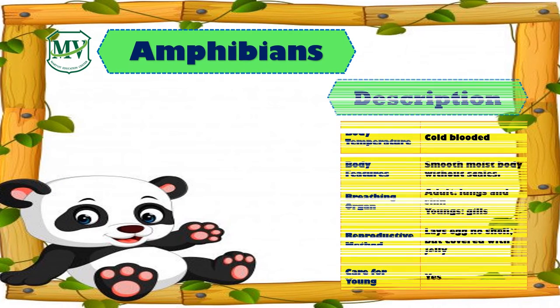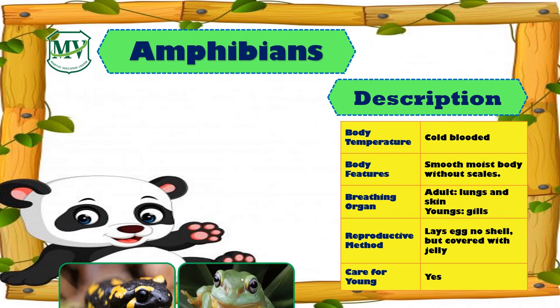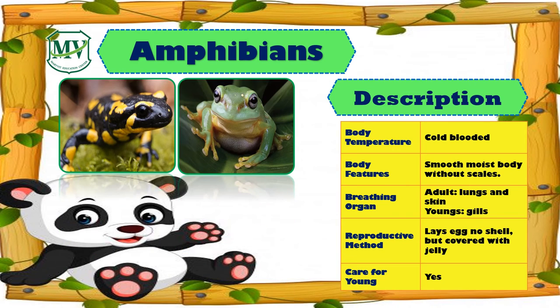Next are the amphibians. Amphibians are cold-blooded animals, like salamander and frog. They have smooth, moist bodies without scales. Adult amphibians breathe through their lungs and skin, and the young ones breathe through their gills. They also lay eggs, but covered with jelly.